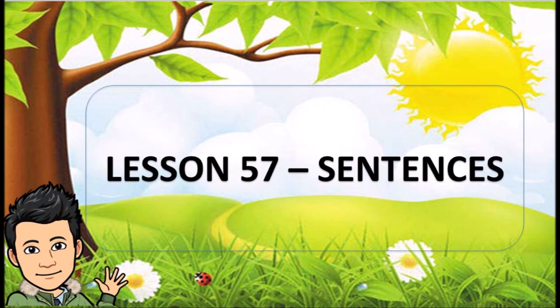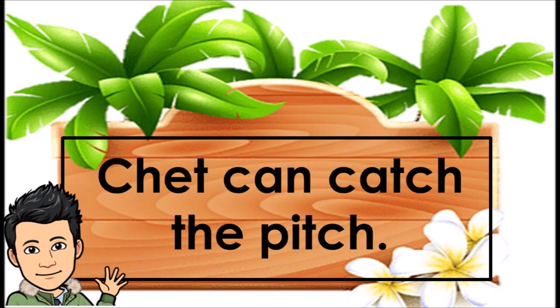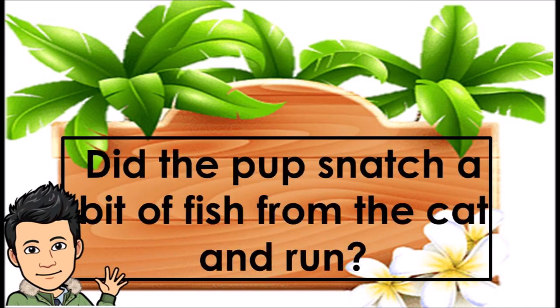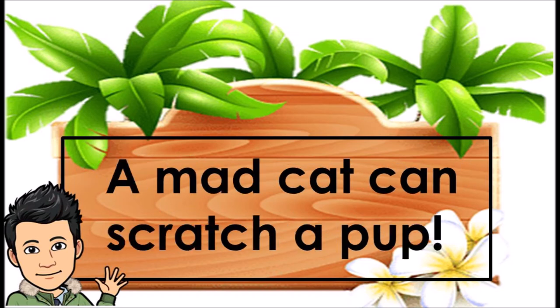Lesson 57 Sentences. Mitch can pitch a fast pitch. Chet can catch the pitch. Did the pup snatch a bit of fish from the cat and run? Did the cat catch the pup? A mad cat can scratch a pup.